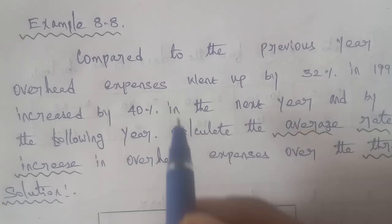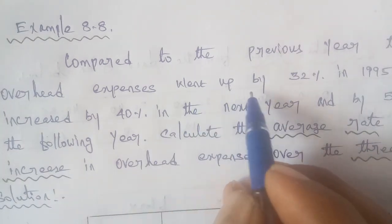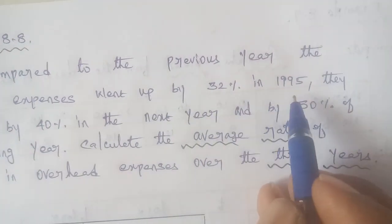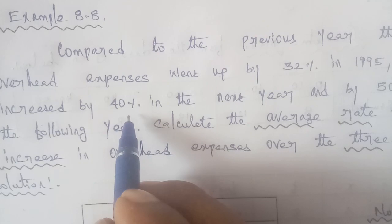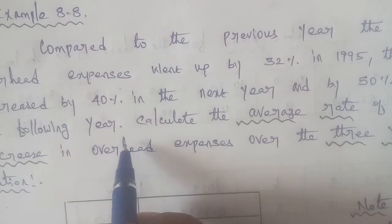Example 8.8. Compared to the previous year, the overhead expenses went up by 32% in 1995. They increased by 40% in the next year and by 50% in the following year.